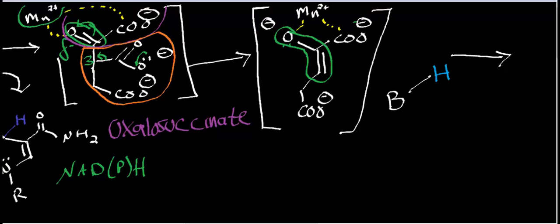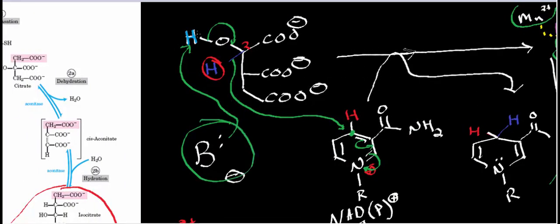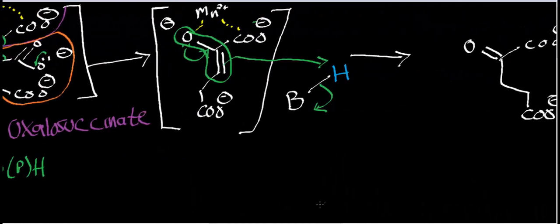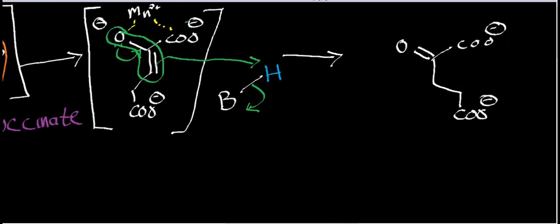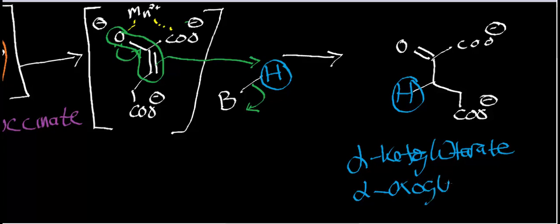Enolates, like enols, are not stable. This enolate quickly collapses: a carbonyl bond forms, the pi bond comes out and abstracts a proton from the base — the same base that originally deprotonated the hydroxyl group of isocitrate. In the process, we generate alpha-ketoglutarate, sometimes called alpha-oxoglutarate.